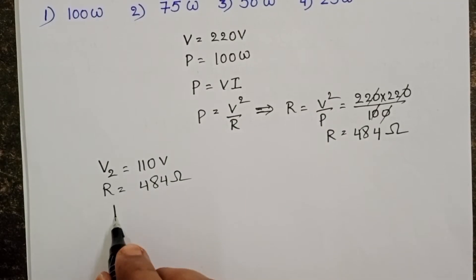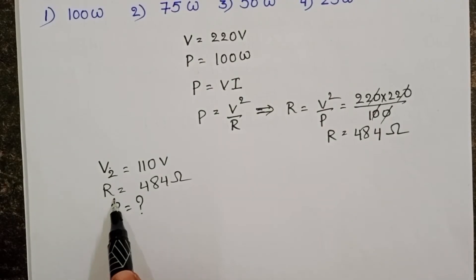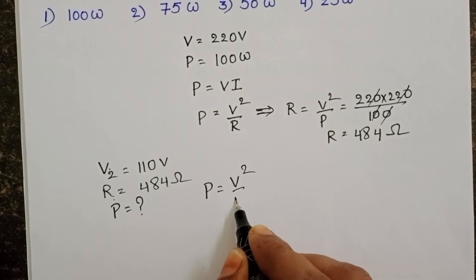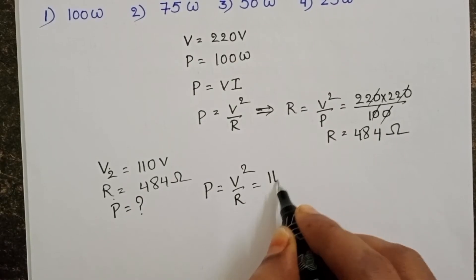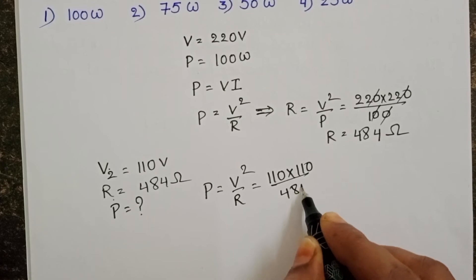We have to calculate the power. When we know potential and resistance, power formula, V square by R. 110 into 110 by 484.